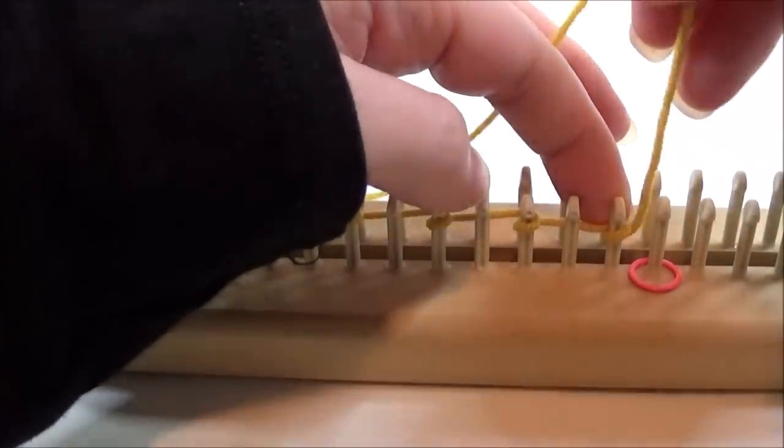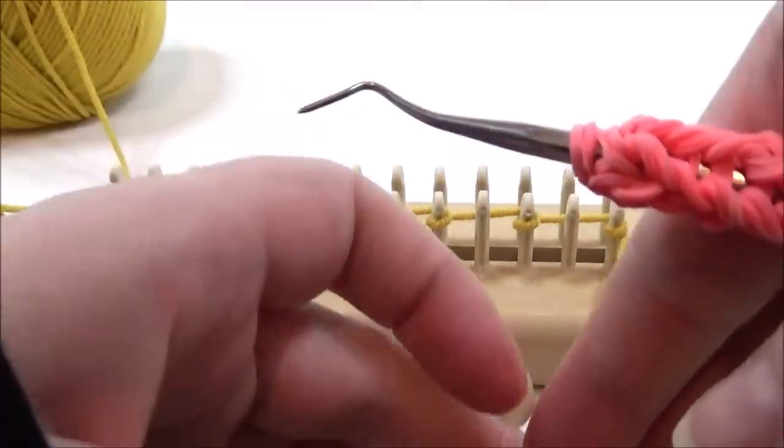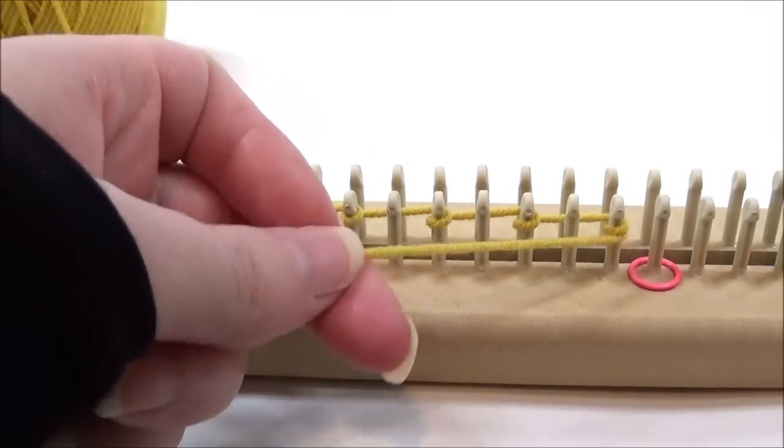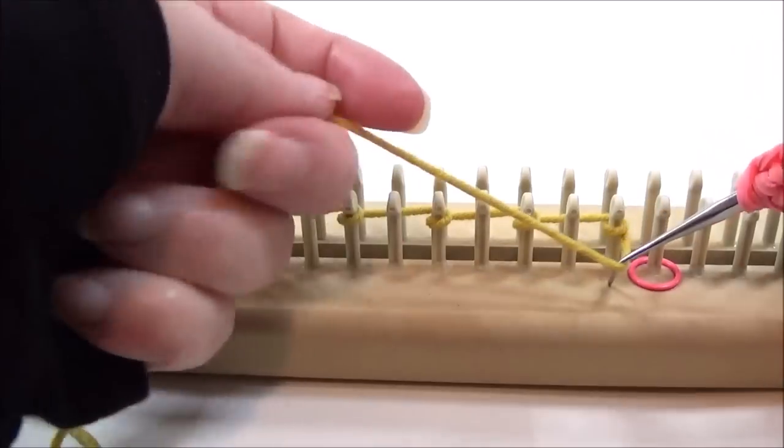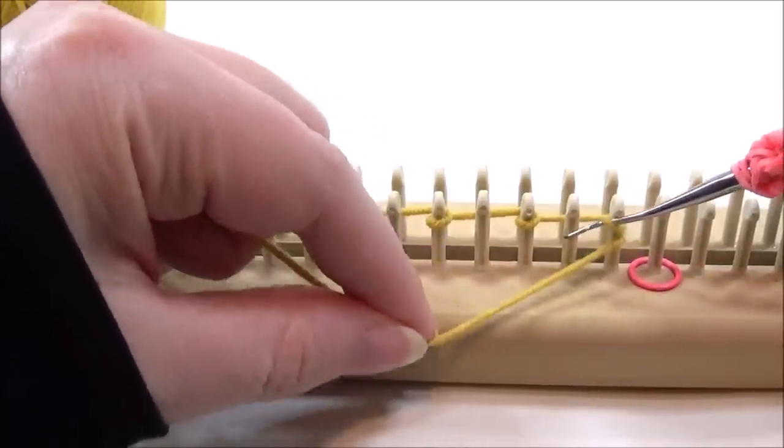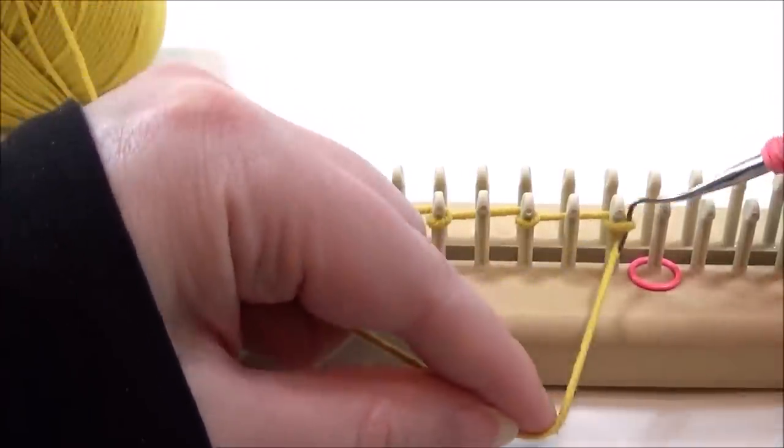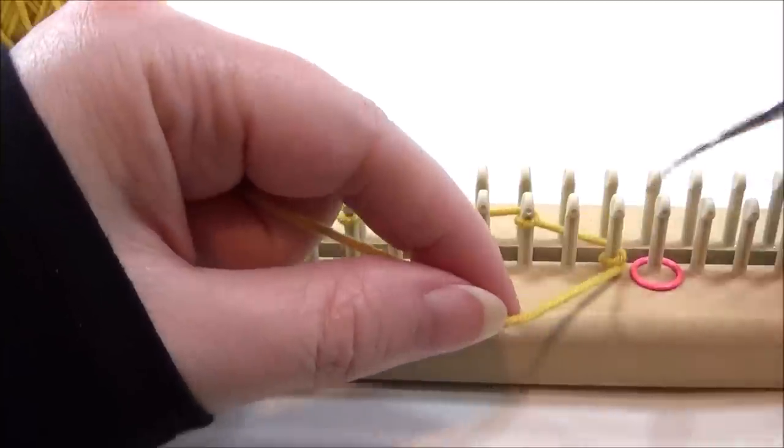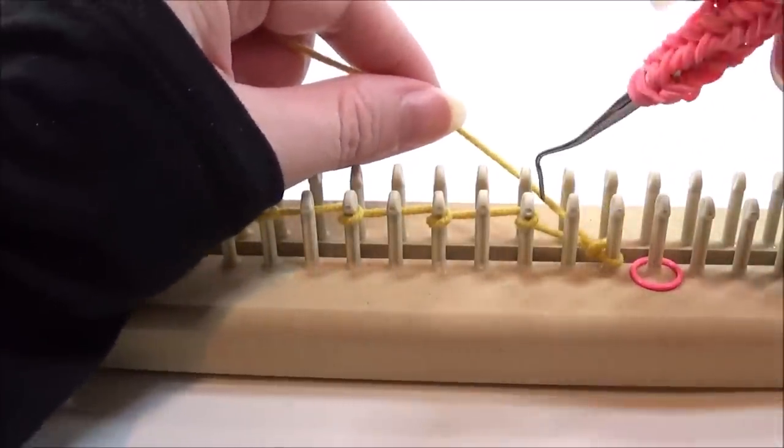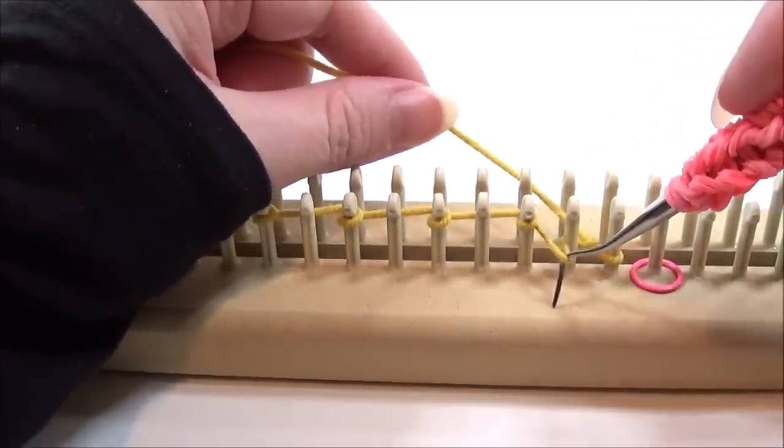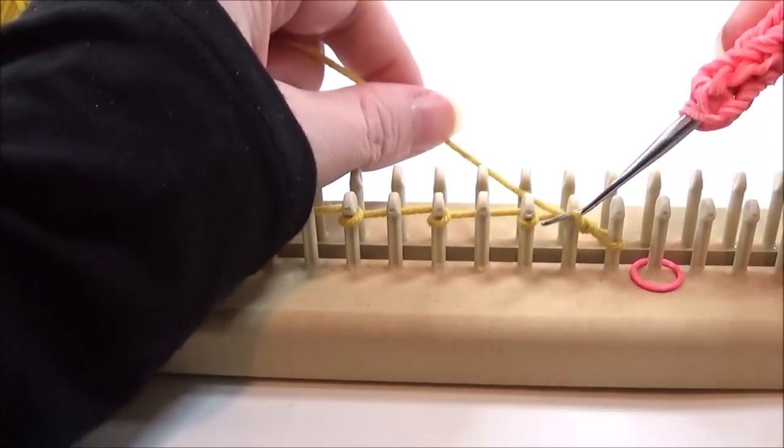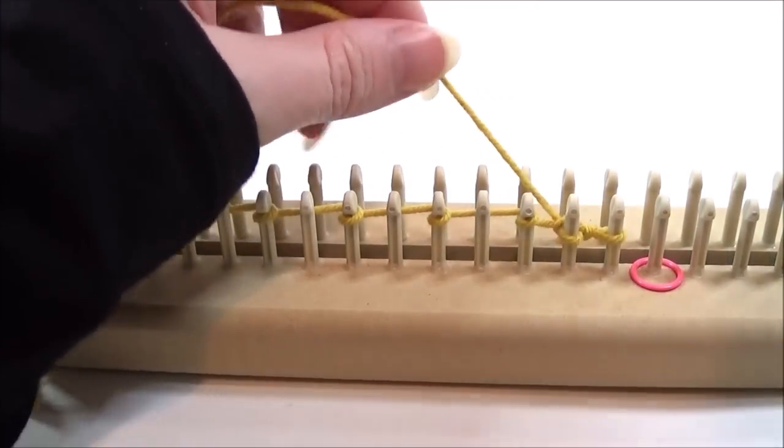You want to go ahead and reverse e-wrap for the number of pegs you're going to be working with. Once you've done that, the second part of the cast-on is to go ahead and e-wrap every peg, which means you have to also reverse e-wrap every peg. We do the empty pegs one at a time. Bring your working strand around your last peg and knit over, then pick up the yarn in between the ladder, reverse e-wrap that peg, and knit over.